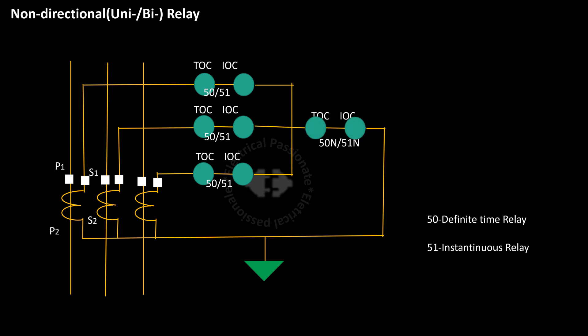Now we shall discuss about non-directional and directional overcurrent and earth fault relay respectively. This is the connection diagram of a non-directional overcurrent and earth fault relays. Here, 50 is definite time overcurrent relay TOC, and 51 is instantaneous overcurrent relay. 51N and 50N are earth fault relays.